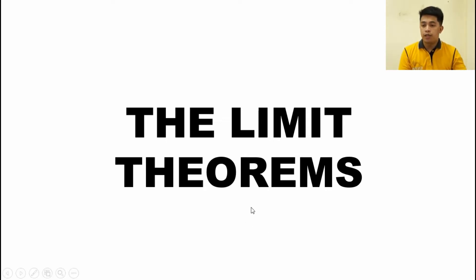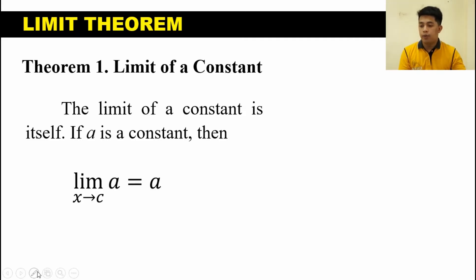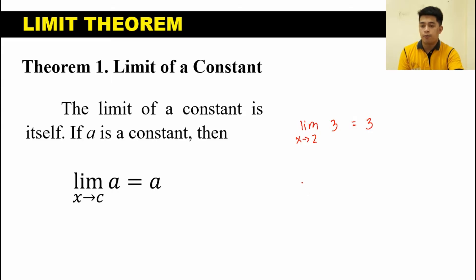The first theorem is called the limit of a constant. This states that the limit of a constant is itself. If A is a constant, then the limit of A as X approaches C is equal to A. For example, the limit of 3 as X approaches 2 is 3. Another example, the limit of 1000 as X approaches 0 is equal to 1000.